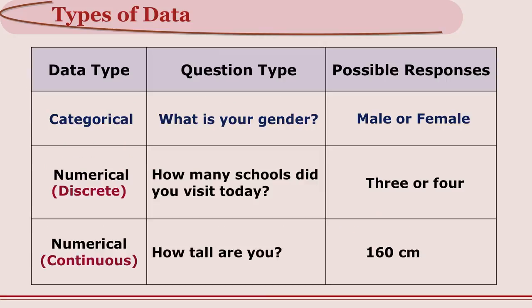If a question is asked — what is your gender — then the answer is male or female. That data is called categorical data because these are two categories. But if you ask how many schools did you visit today, you will say 3, 4, or 8. That is a number — this is numerical data.